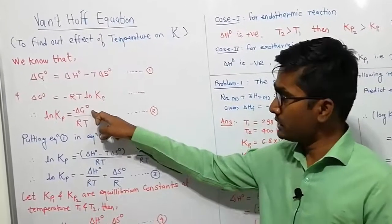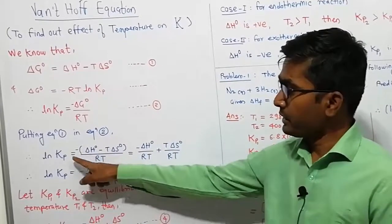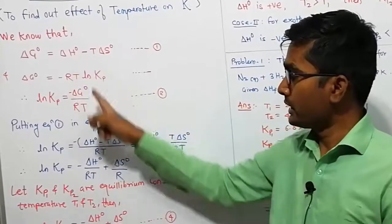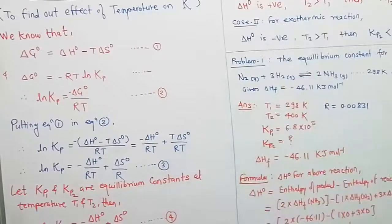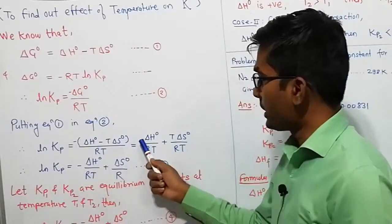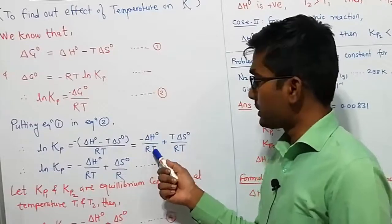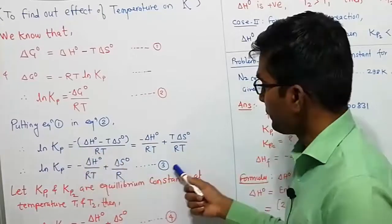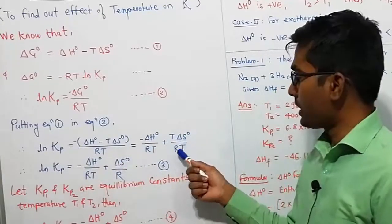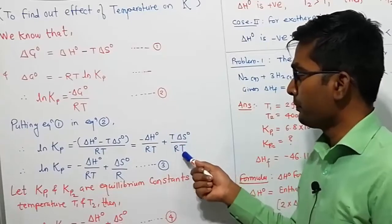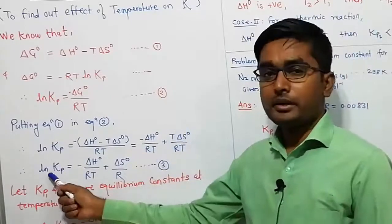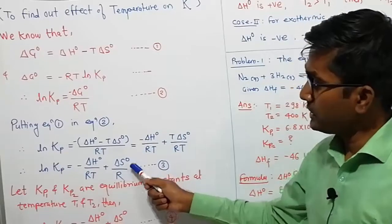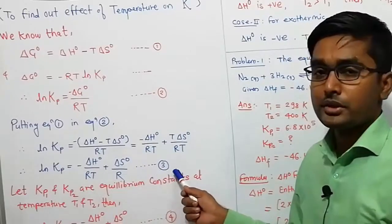Substituting ΔG⁰ into equation 2, we get ln Kp = −(ΔH⁰ − T·ΔS⁰) / RT. Removing the bracket, this becomes: ln Kp = −ΔH⁰/RT + T·ΔS⁰/RT. The T terms cancel out, giving the simplified version: ln Kp = −ΔH⁰/RT + ΔS⁰/R. Let this be equation number 3.